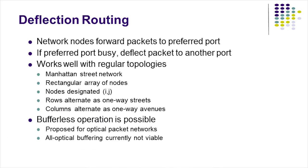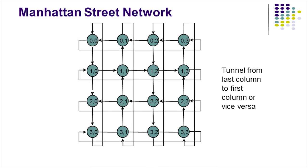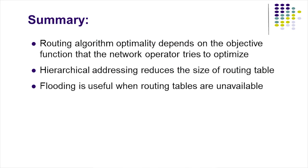Deflection routing requires the network to provide multiple paths for each source and destination pair. One advantage is that the node can be bufferless, since packets don't have to wait for a specific port to become available. If the preferred port is unavailable, the packet can be deflected to another port, which will eventually find its own way to the destination. Deflection routing often works well in a regular topology, such as a Manhattan Street network.